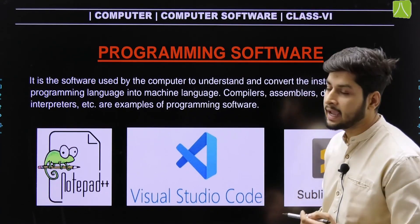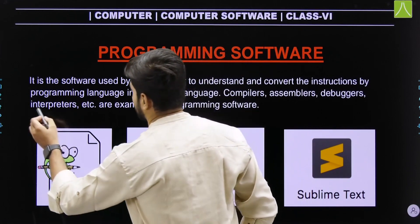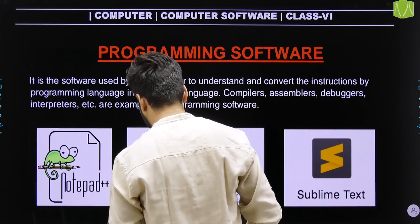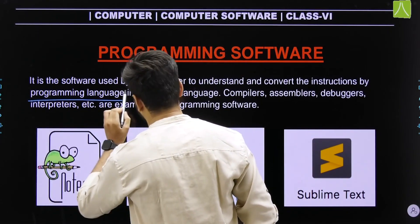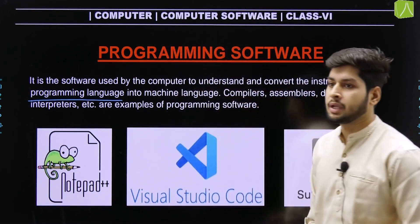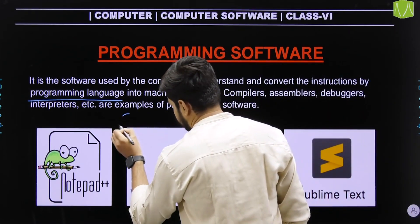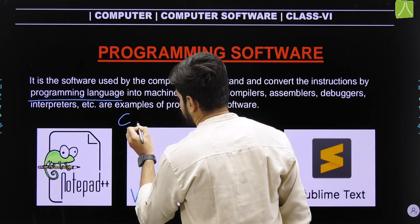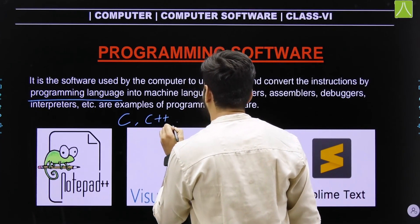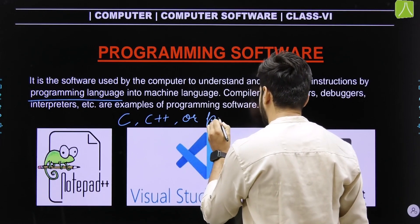Now, what is high-level language? High-level language is also known as programming language. Programming language is basically C, C++, and Python is also a programming language.